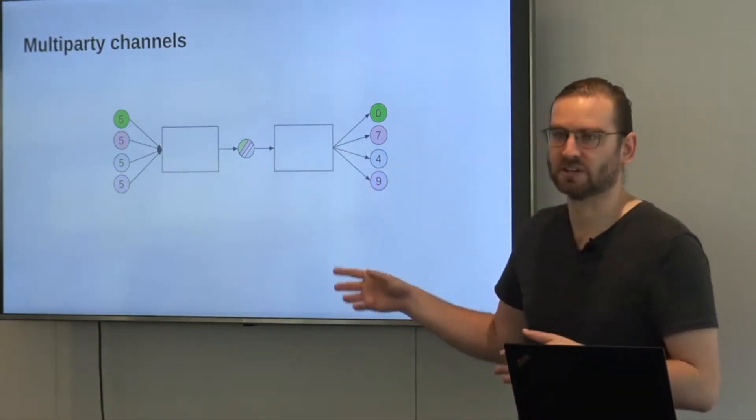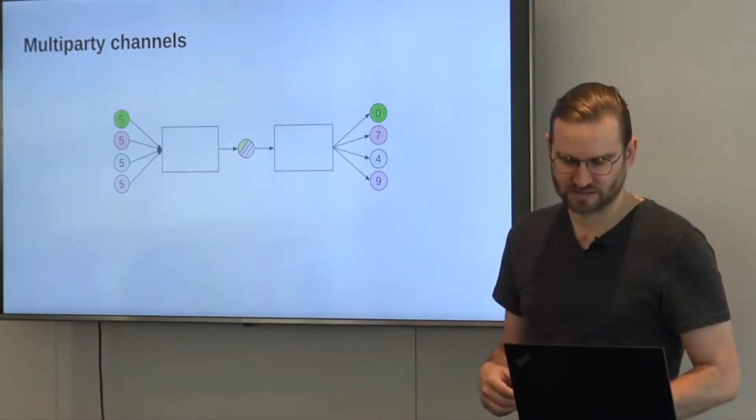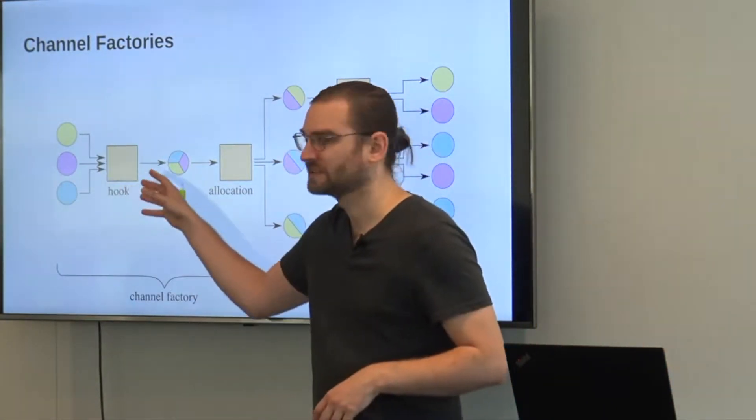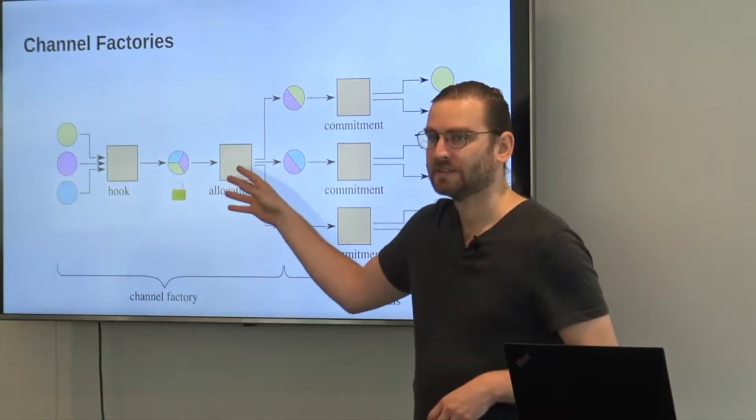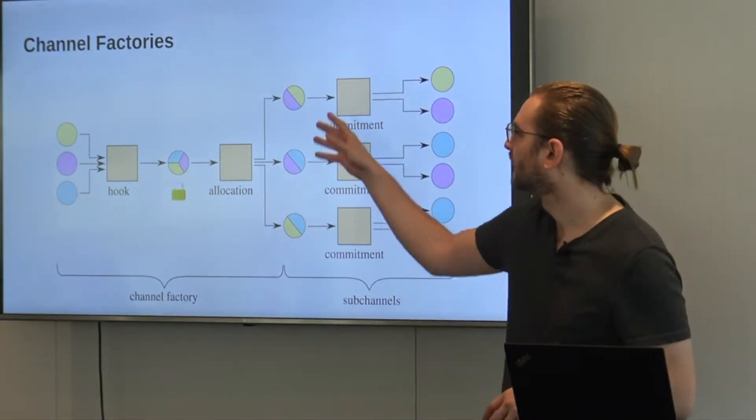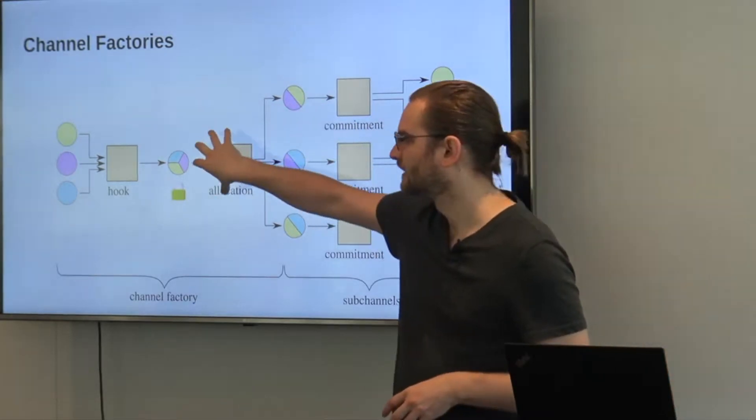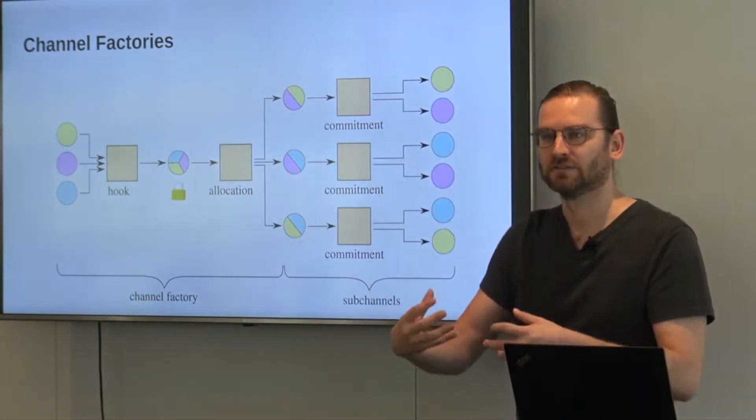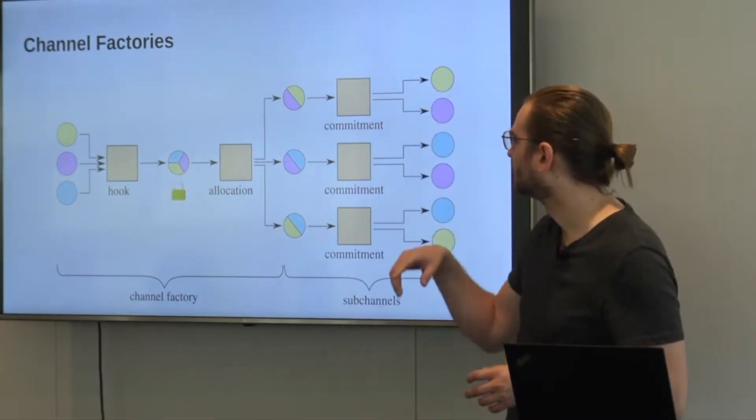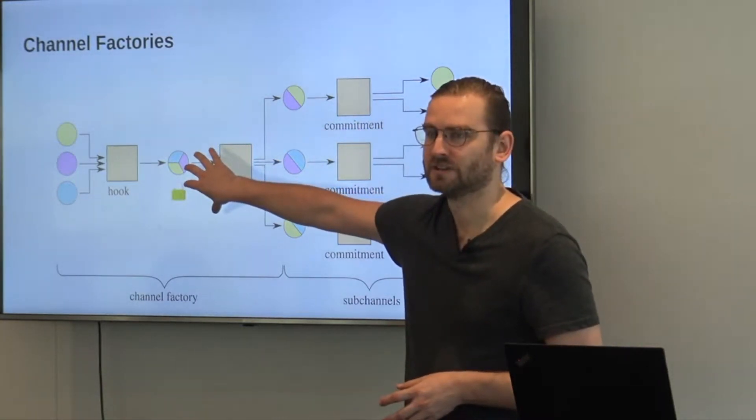And you could then also start building channels on top of this stuff. So that's basically the idea of channel factories. You have this setup transaction and you have this settlement transaction that in turn then splits funds into smaller groups and you can then have channels built on top of this bigger group. You can split them and really have just the yellow and the pink one talk to each other while we still have control over the entirety of your funds.